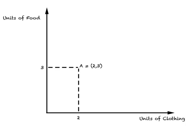Suppose you are looking at two goods: clothing, which is on the x-axis, and food, which is on the y-axis. Suppose you are given a point like (2, 3) and you can plot this point. Remember, the first number represents the good on the x-axis, which is units of clothing — so clothing is 2 units and food is 3 units. This gives us point A.